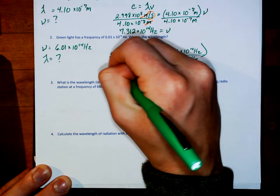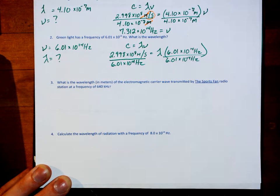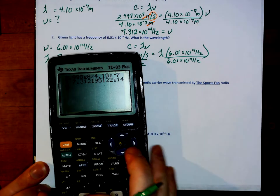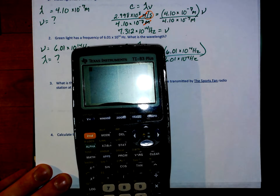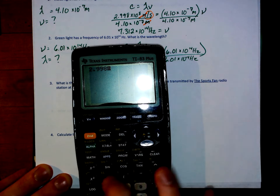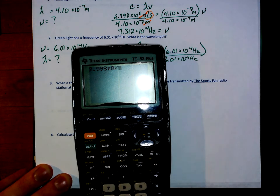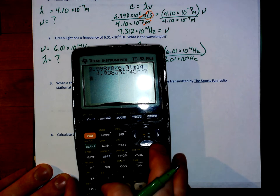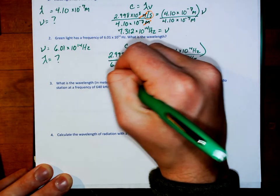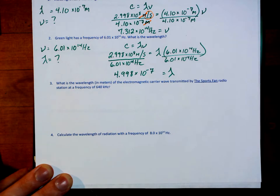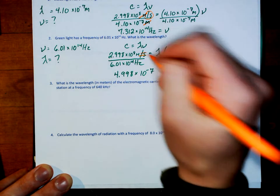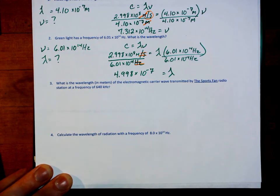It will go away on the right, and then we're going to plug that into our calculator using that E button — 2.998 E8 divided by 6.01 E14 — giving me 4.998 times 10 to the negative 7th. To determine our units, the per second on top and the hertz or second to the negative one on the bottom go away, leaving me with meters, which makes sense because it is a wavelength that I am looking for.